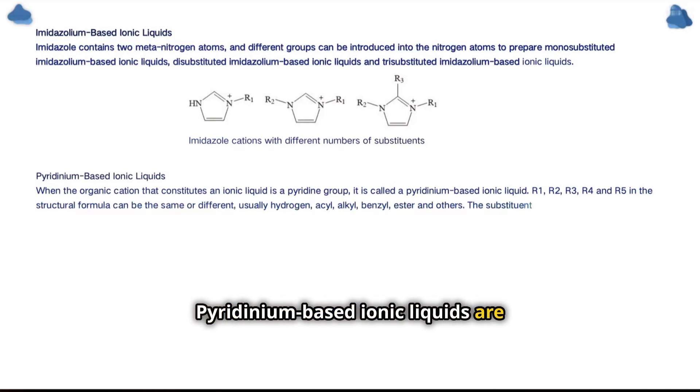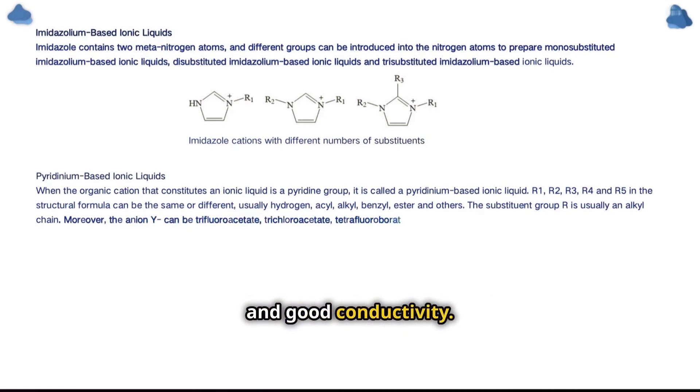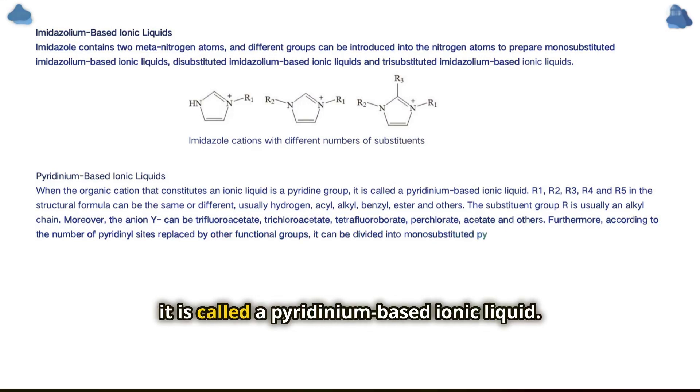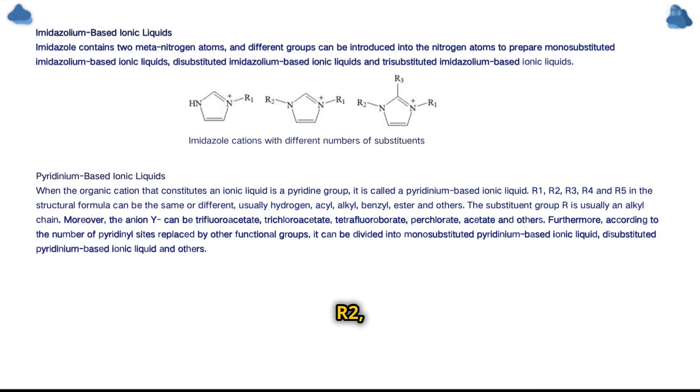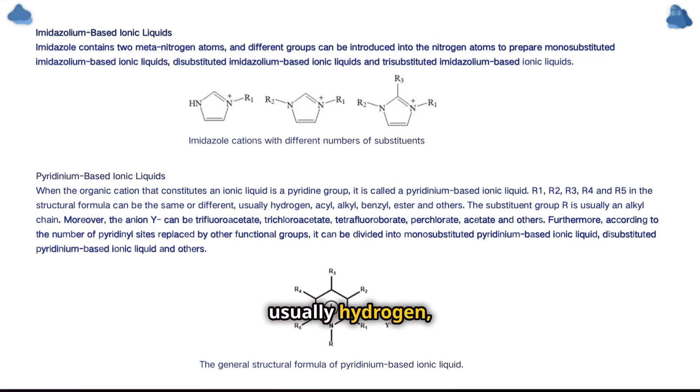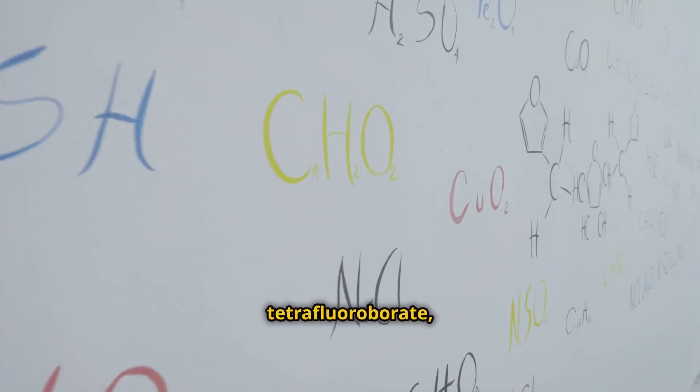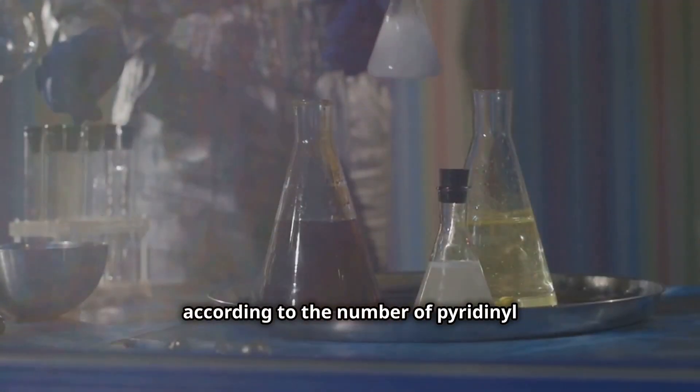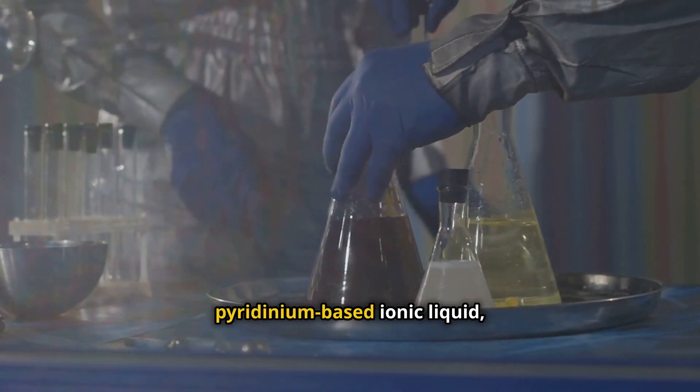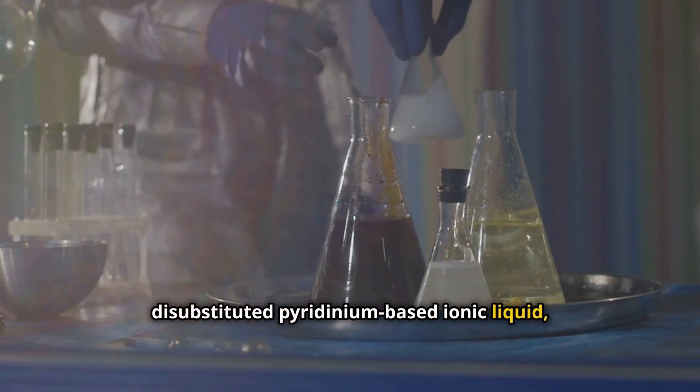Pyridinium-based ionic liquids are another important class, known for their high thermal stability and good conductivity. When the organic cation that constitutes an ionic liquid is a pyridine group, it is called a pyridinium-based ionic liquid. R1, R2, R3, R4, and R5 in the structural formula can be the same or different, usually hydrogen, acyl, alkyl, benzyl, ester, and others. The substituent group R is usually an alkyl chain. Moreover, the anion Y can be trifluoroacetate, trichloroacetate, tetrafluoroborate, perchlorate acetate, and others. Furthermore, according to the number of pyridinal sites replaced by other functional groups, it can be divided into monosubstituted pyridinium-based ionic liquid, disubstituted pyridinium-based ionic liquid, and others.